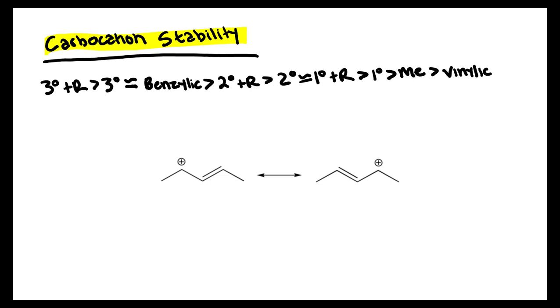Next, we have secondary plus resonance carbocations, which are also referred to as secondary allylic carbocations. Those are going to be more stable than carbocations that are just secondary without any resonance.